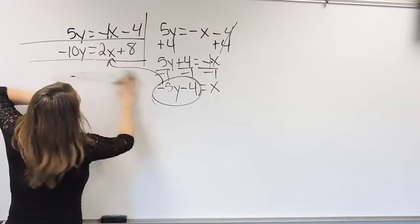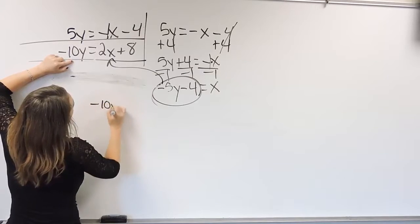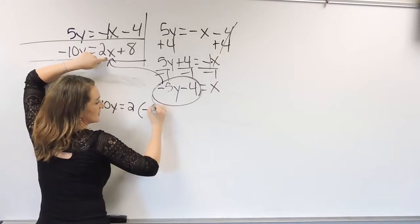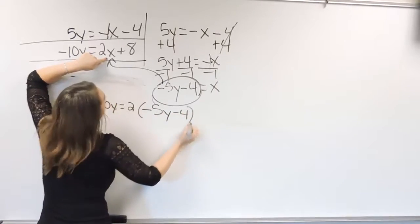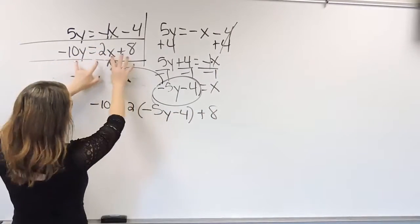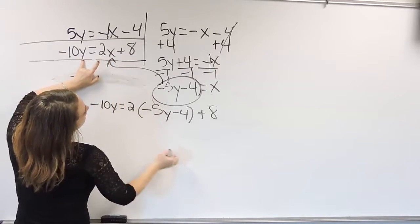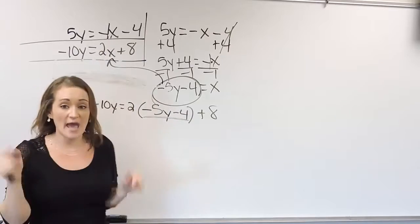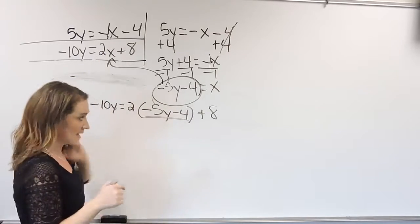negative, hold on, let me scooch this down a little bit. Negative 10y is equal to 2, and instead of x, I'm putting negative 5y minus 4, and then plus 8. So this exact equation here, only difference is I'm plugging in the negative 5y minus 4 for the x. Everything else stays the same.